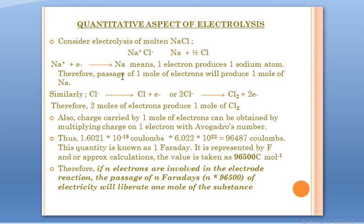Proportionally, passage of one mole of electrons will produce one mole of sodium. For chlorine, two chloride ions lose one electron each — two electrons lost — to give one molecule of chlorine gas. So two moles of electrons produce one mole of chlorine gas. The quantitative conclusion: one mole of electrons produces one mole of sodium, and two moles of electrons produce one mole of chlorine gas.